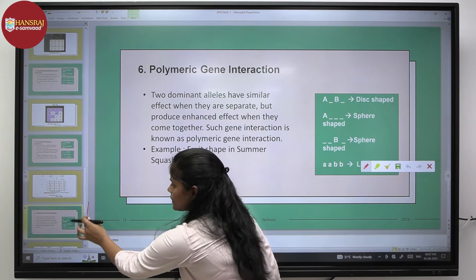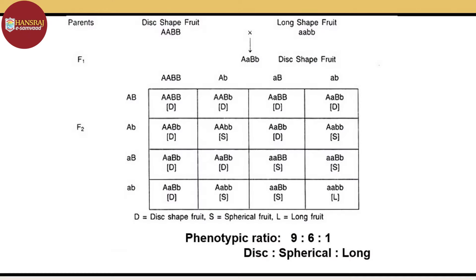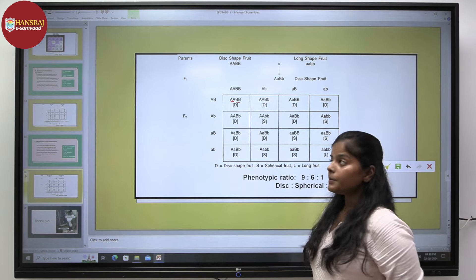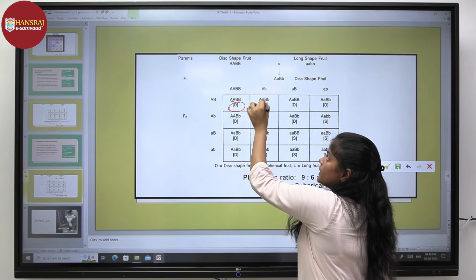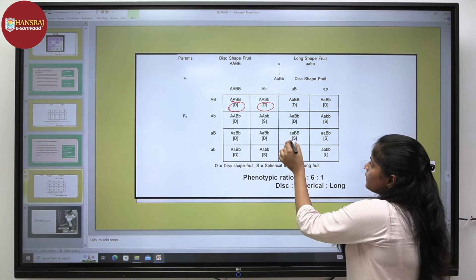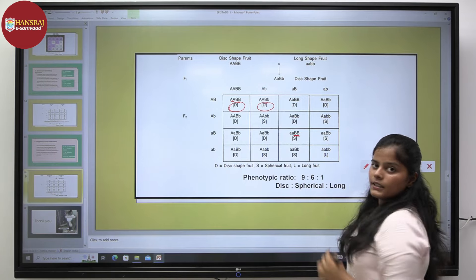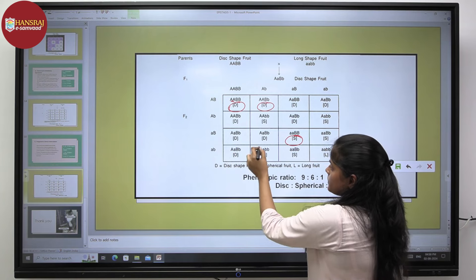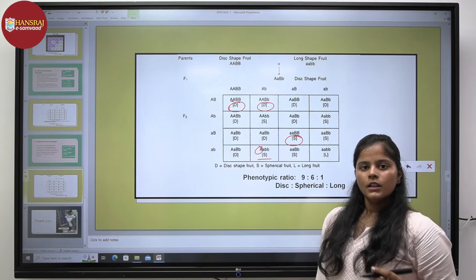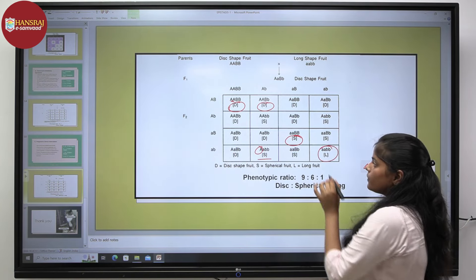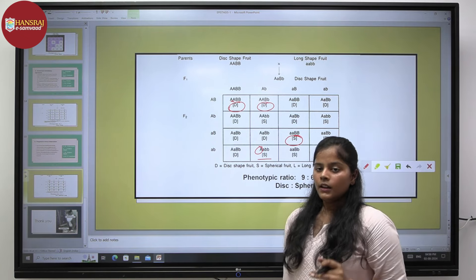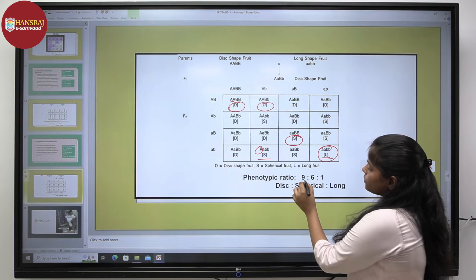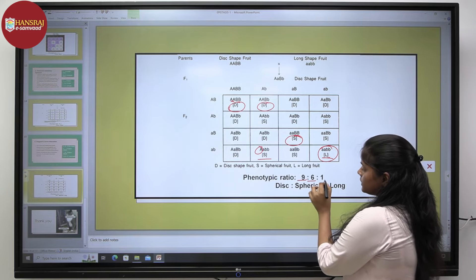In the Punnett square, wherever both dominant attributes are present, a disc-shaped phenotype is shown. Where only capital B is present, sphere-shaped is observed. Where only capital A is present, sphere-shaped is again observed. In a homozygous recessive condition for both genes, a long-shaped fruit is obtained, leading to a ratio of 9:6:1.